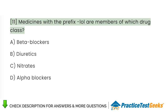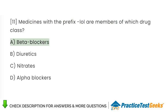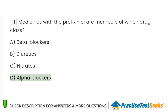Medicines with the prefix 'lol' are members of which drug class? A. Beta blockers. B. Diuretics. C. Nitrates. D. Alpha blockers.